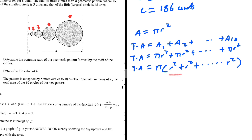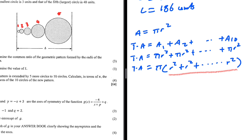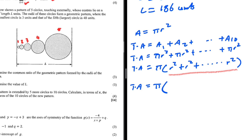Rather than finding a single formula for the sum of the squared radii, we'll calculate each term manually. The radius of the first circle is 3 units, so we have 3 squared. Since a equals 3 and r equals 2, the radius of the second circle is 6, giving 6 squared.